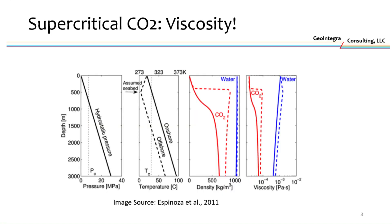There are other things that are special about supercritical CO2. Its very high density is useful, but it also tends to have a relatively low viscosity. This chart by Espinoza and others from 2011 shows the increase in pressure for two scenarios — onshore and offshore — and the associated pressure profiles. CO2 density increases as you approach the critical depth where it goes supercritical, while water density in blue doesn't change much, since water is fairly incompressible.